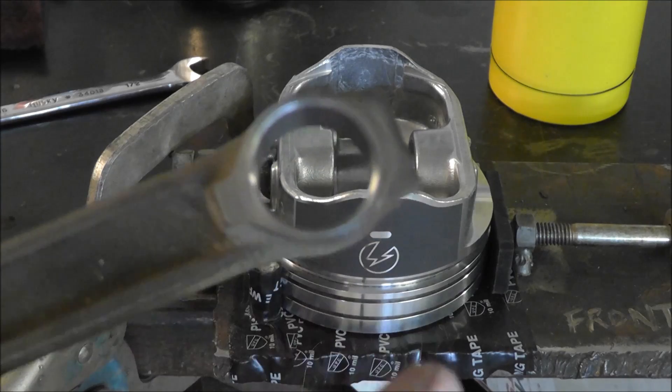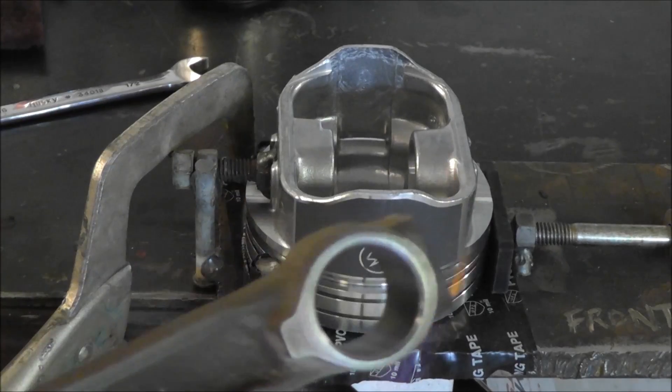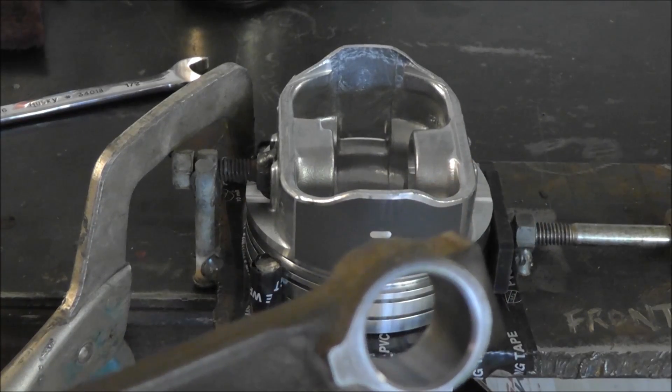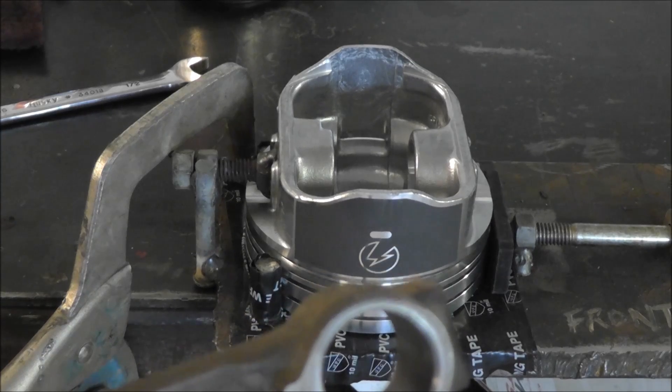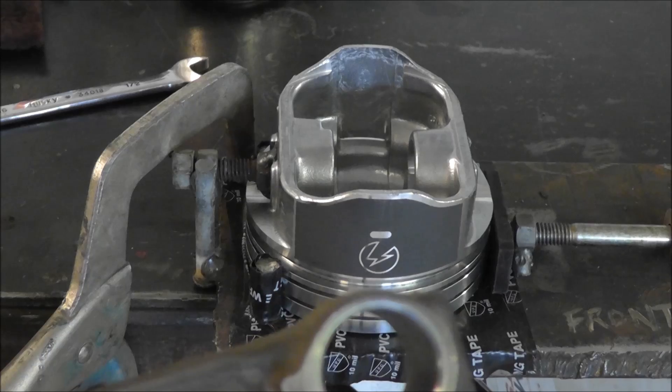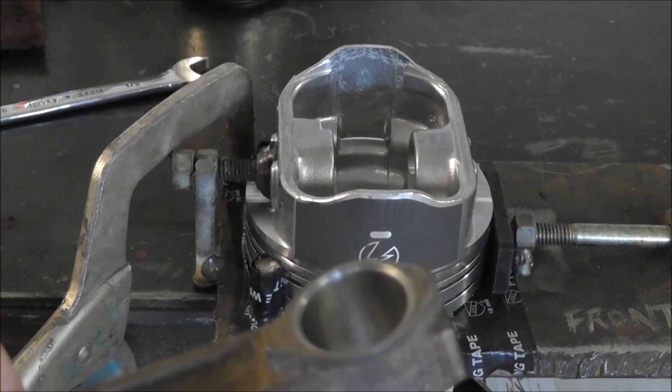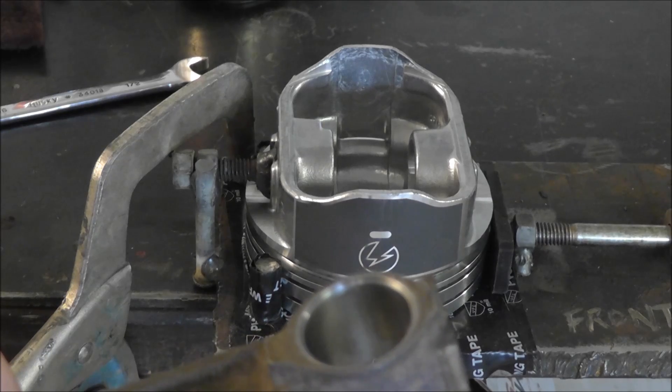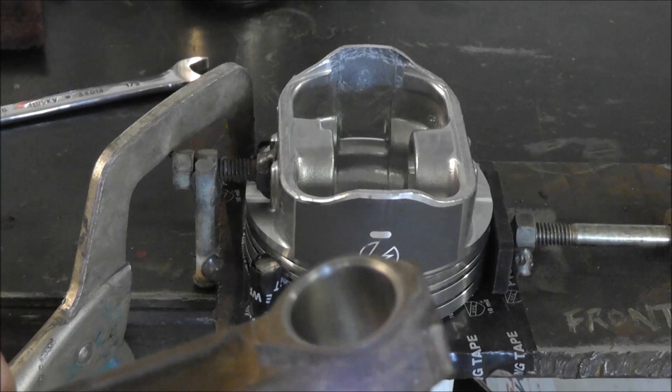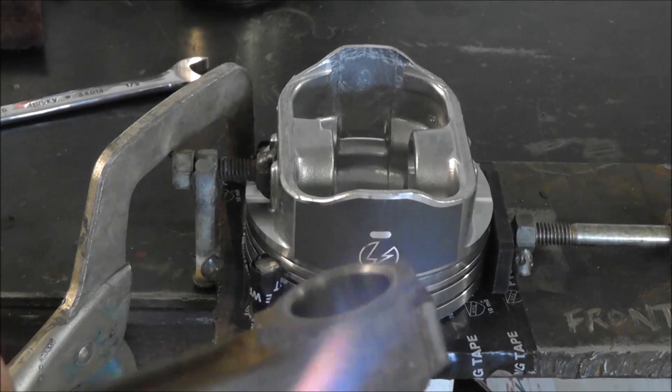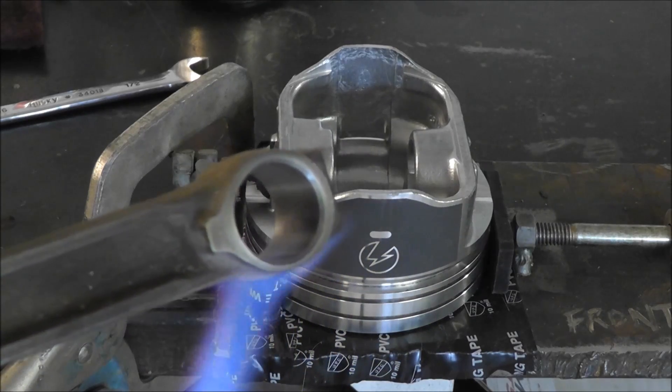You're going to see that silver metal is going to change from straw color to brown and then to blue. Once it goes blue, you're done. I don't know if you guys can see it on camera, but hopefully it will show.